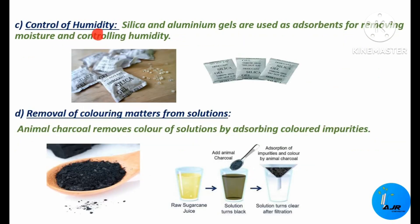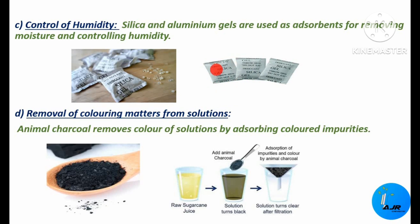The next very important application is control of humidity. Silica and alumina gels are used as adsorbents for removing moisture and controlling humidity. Several delicate instruments get spoiled in contact with moisture, so such instruments can be kept out of contact with moisture by using silica gel or alumina gel adsorbent packets placed inside their packages, which absorb the moisture present so that the delicate instruments remain safe.